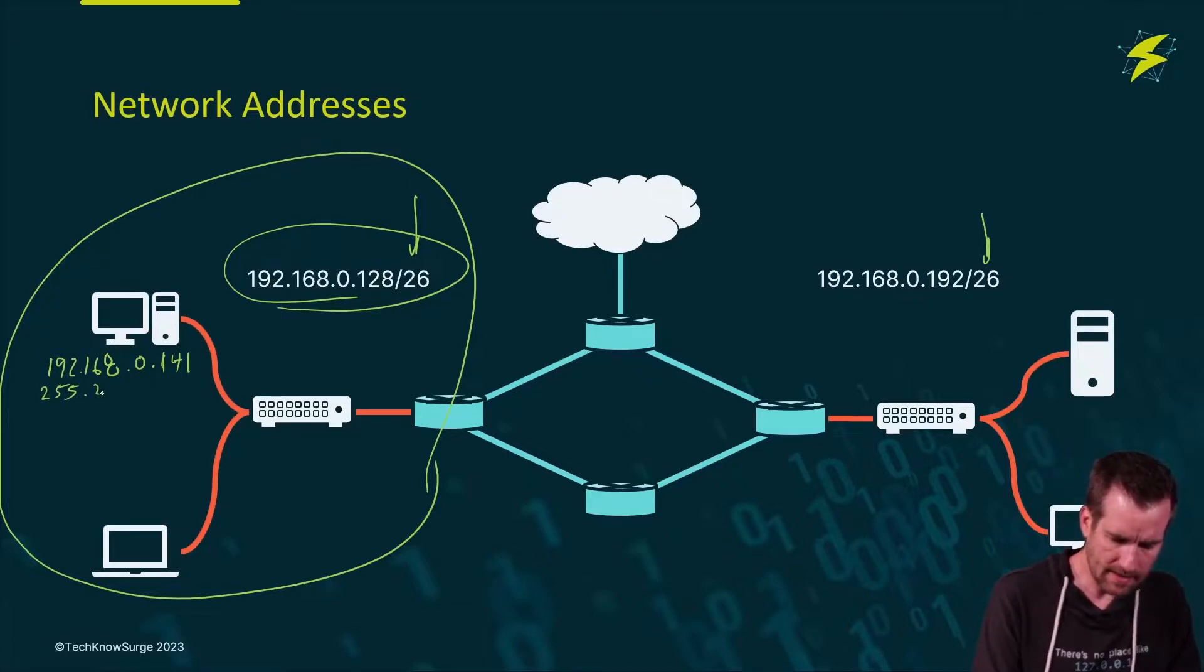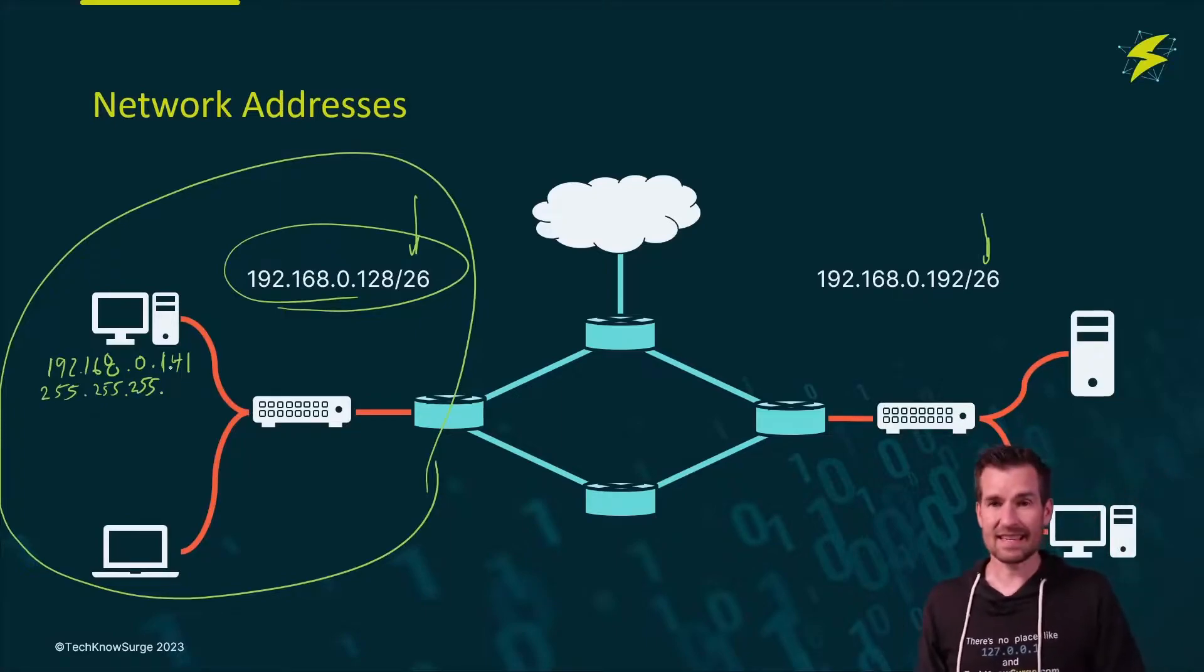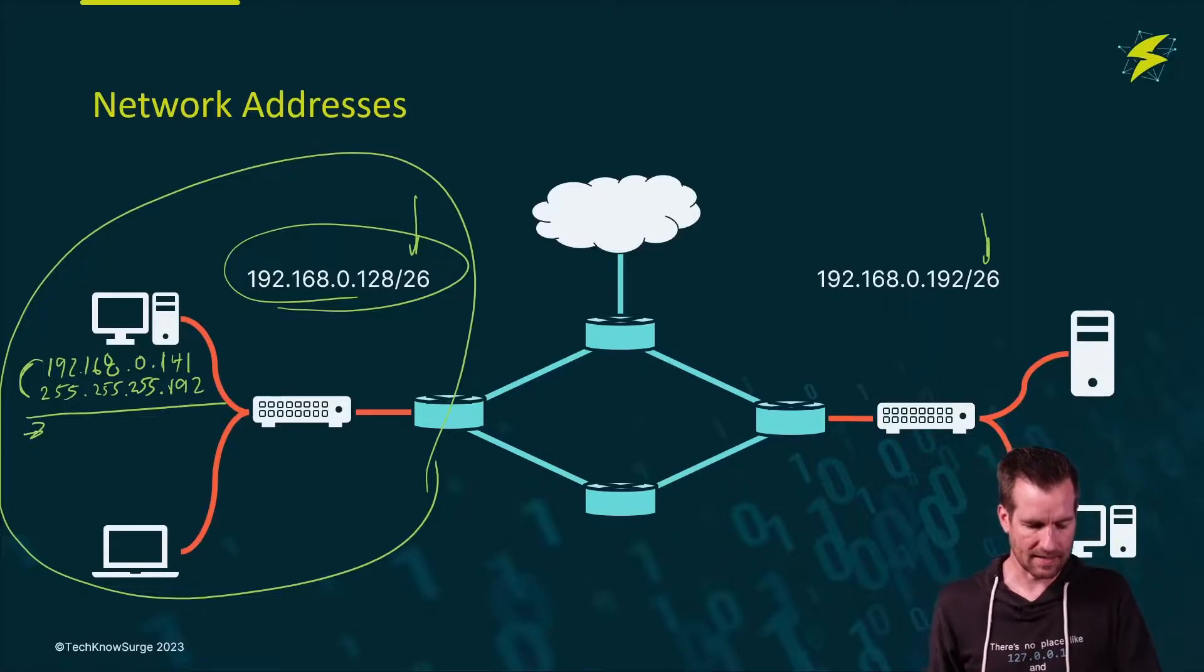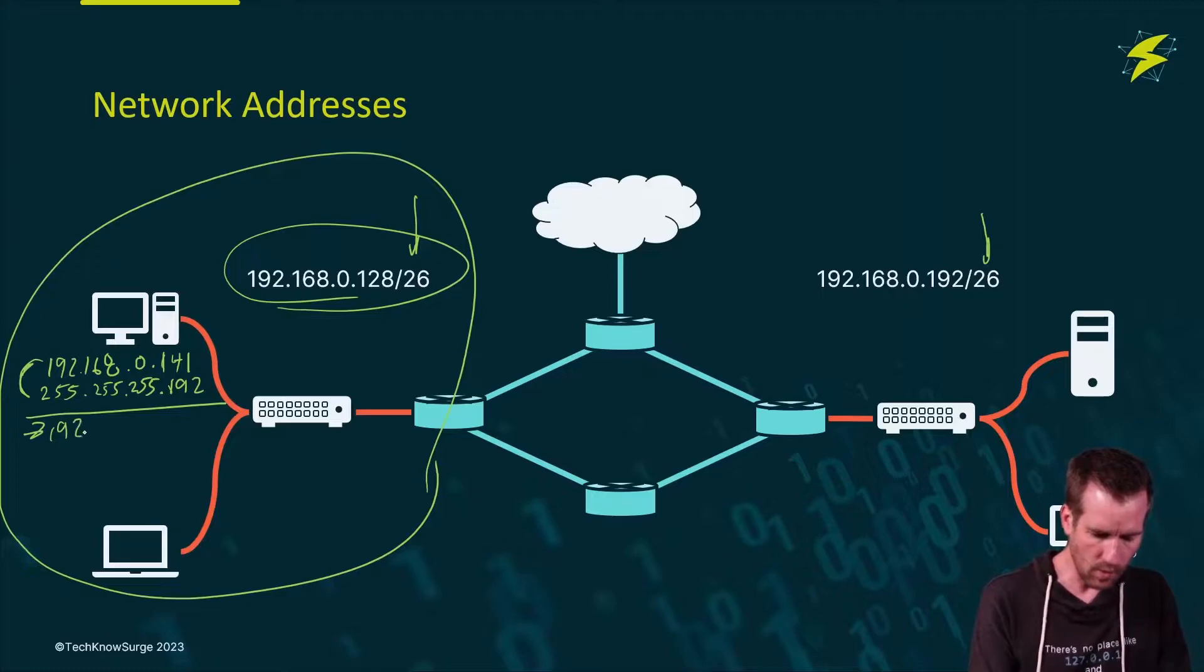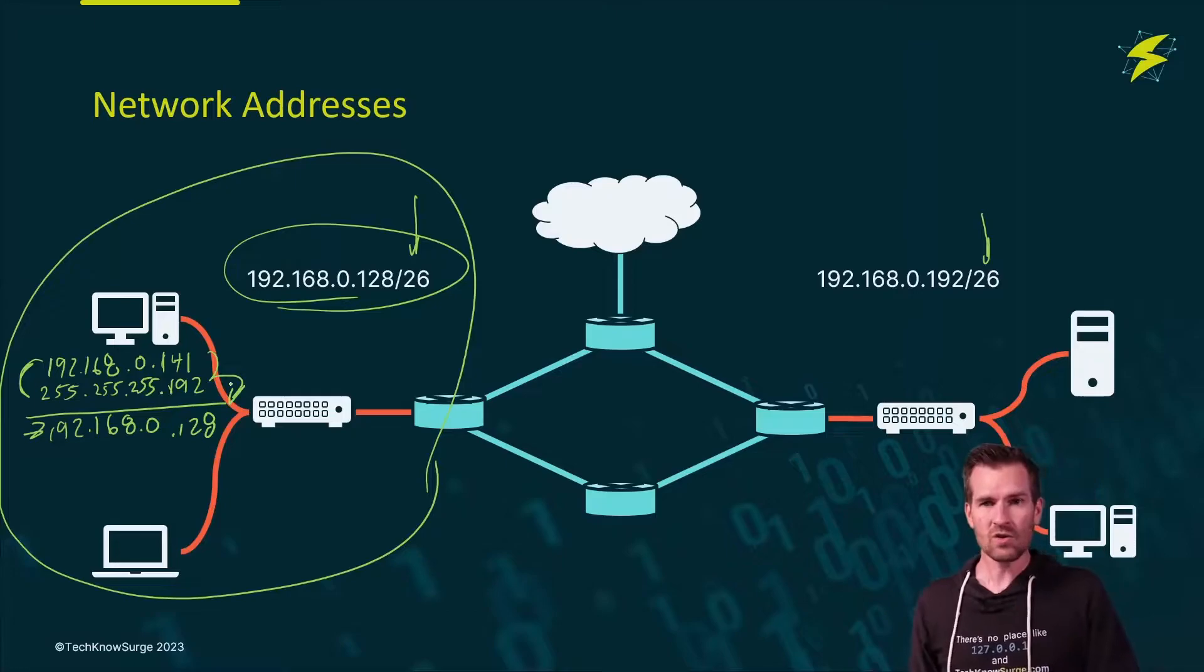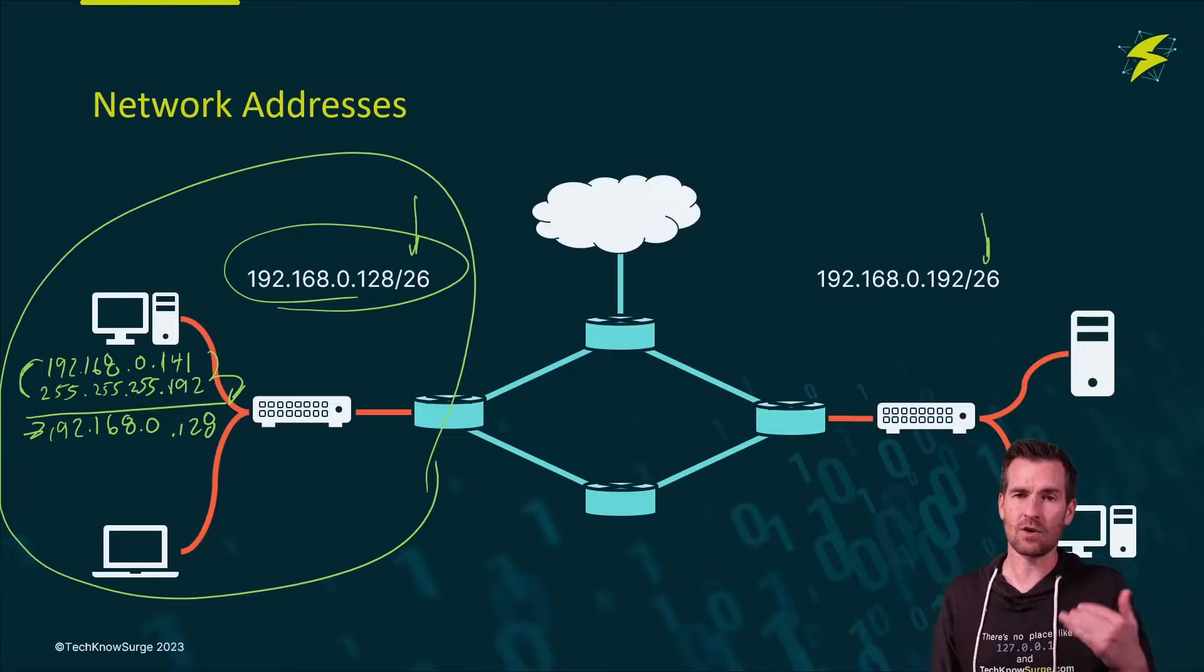It also receives a subnet mask. Our subnet mask is 255.255.255.192, and this is a slash 26. So what it does is this process called anding between these two to come up with the answer of what the network is. In this case, it would come up with 192.168.0.128 because that is the network address. But it's got to do some calculation to figure that out. Let's go through those steps.